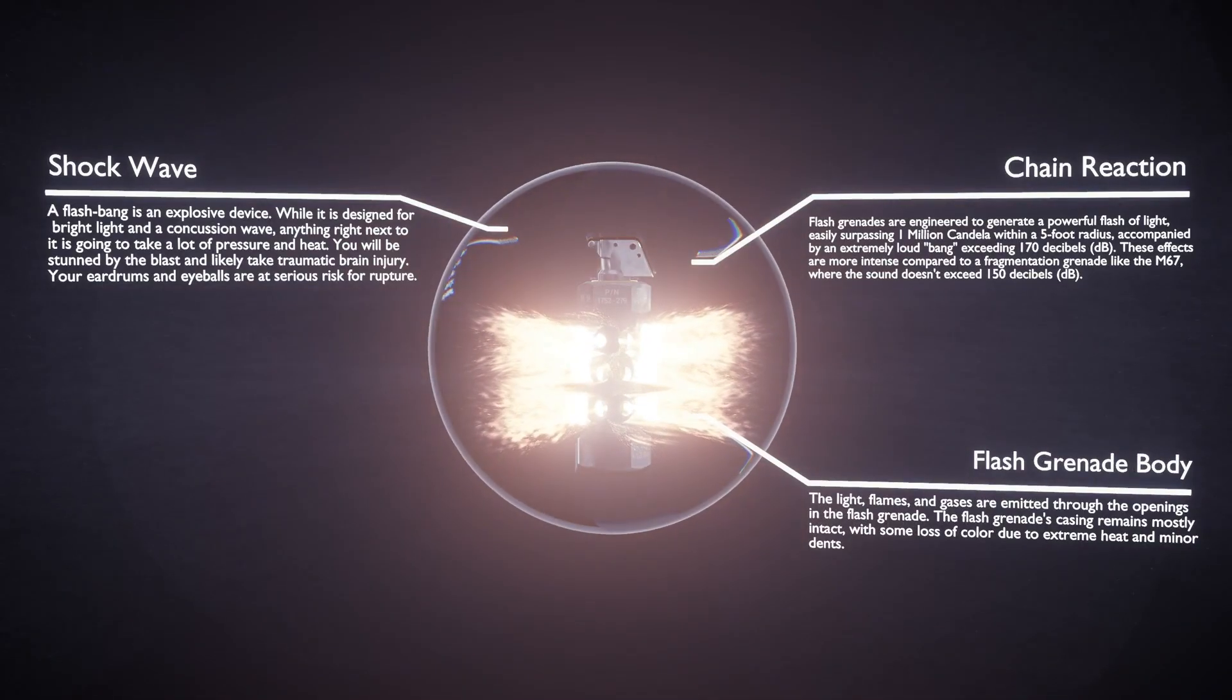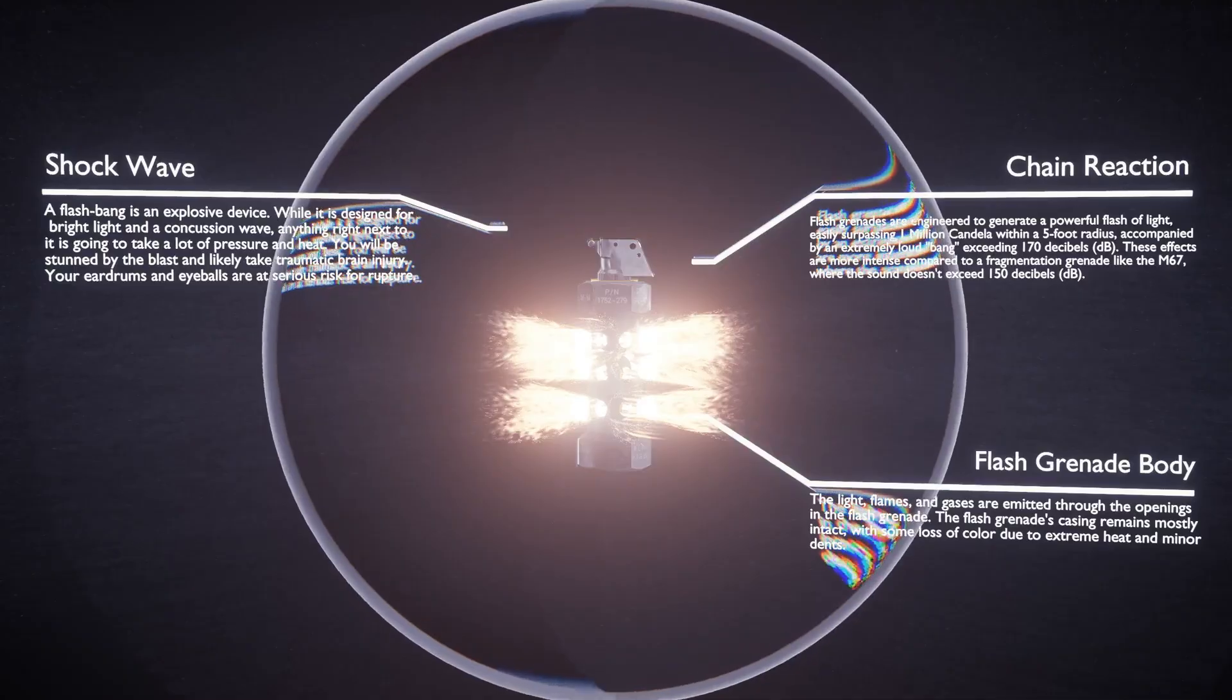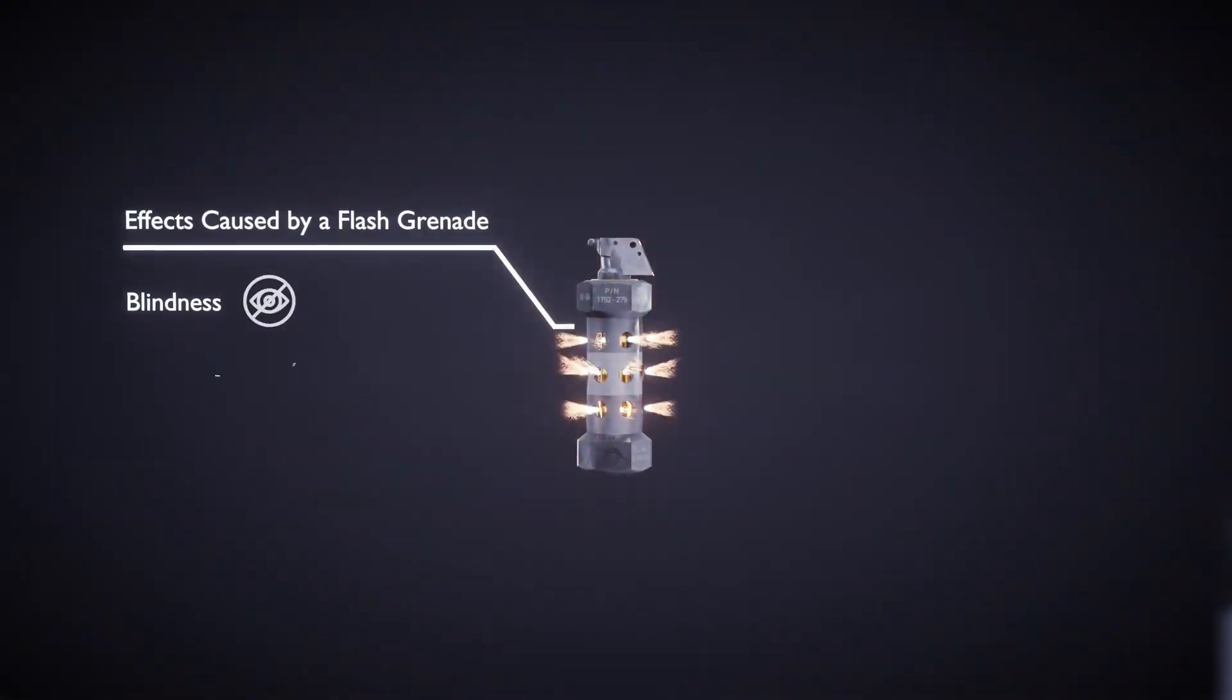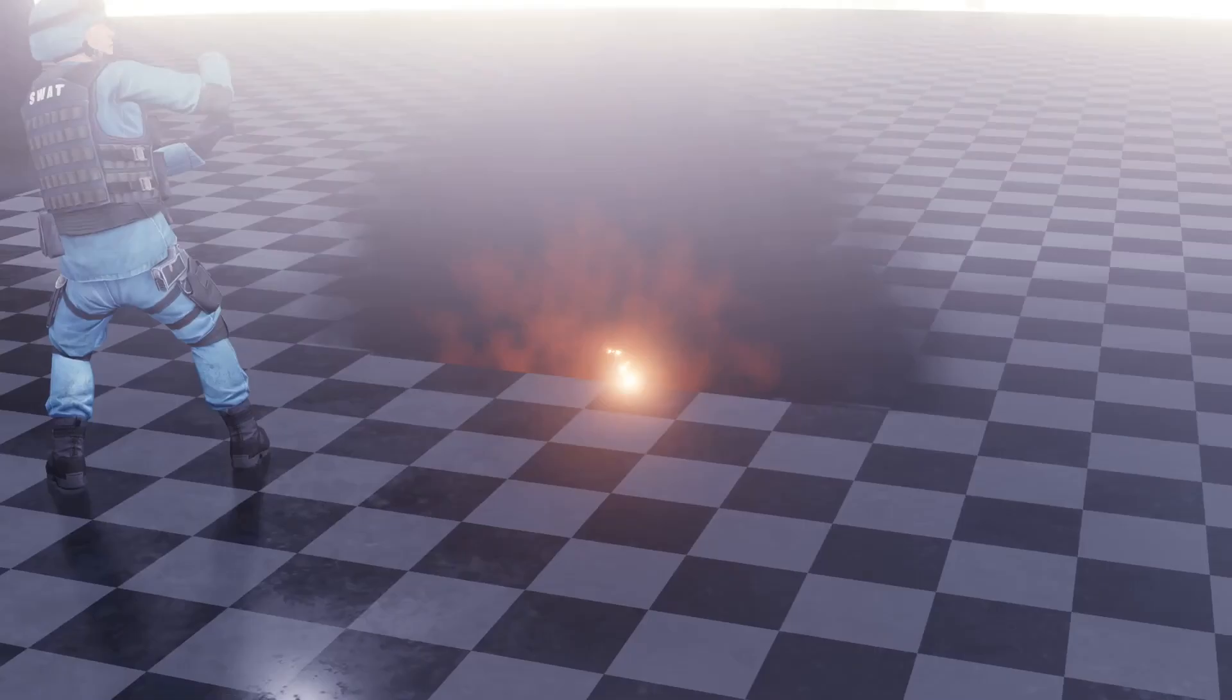The grenade becomes armed once the primary and secondary safety pins are removed, releasing the safety lever, commonly called the spoon. If the lever is not released, the grenade remains inactive.